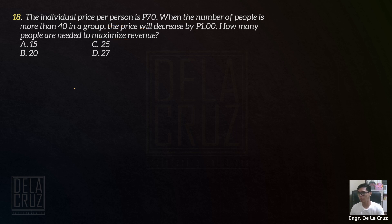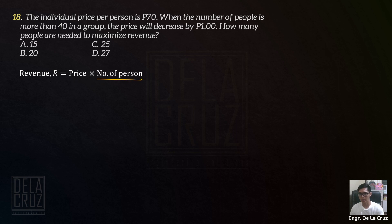Gawin natin yung formula ng revenue — gawa ka ng equation. Take note: revenue is equal to the price times the number of units. In this case, yung unit natin is number of person. Then define the price. What is the price? The price here is 70 per person.